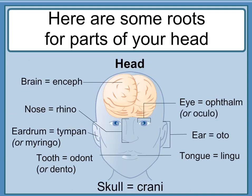Here are some roots for parts of your head. Brain is 'enceph-'. Nose is 'rhino-'. Eardrum is 'tympan-' or 'myring-'. Tooth is 'odont-' or 'dent-'. Skull is 'crani-'. Eye is 'ophthalm-' or 'ocul-'. Ear is 'ot-'.